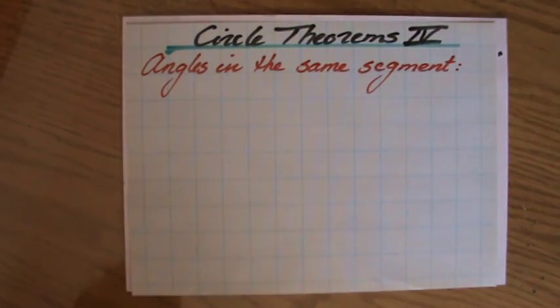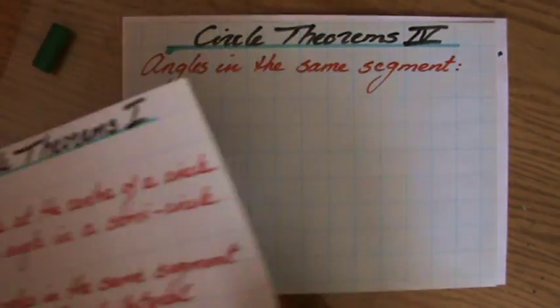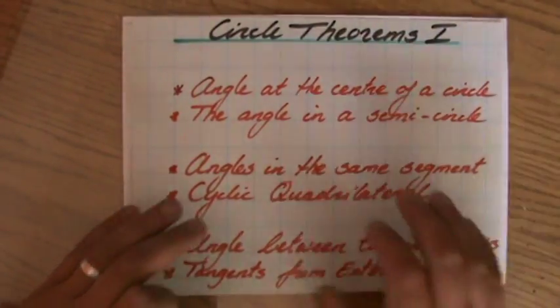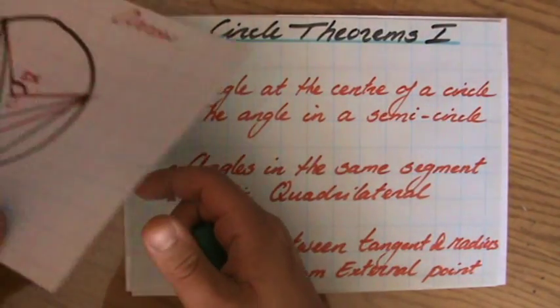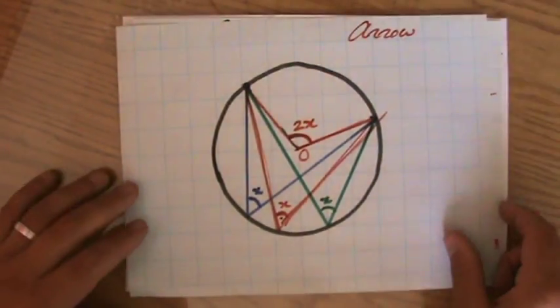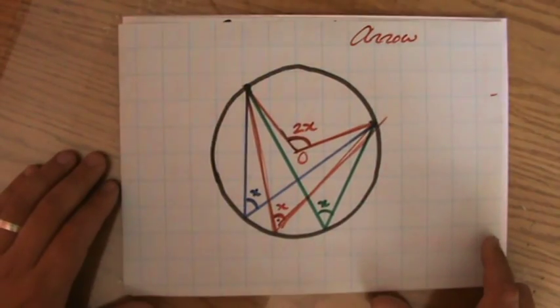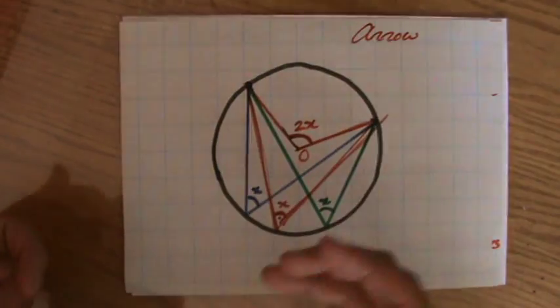We're doing circle theorems together, and so far we have done angles at the center of a circle. A requirement for that circle theorem is that the lines go through the center of a circle. Make sure you've seen this video, otherwise go to my site explainingmaths.com where you'll find all my resources.